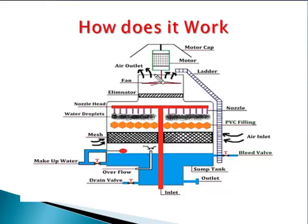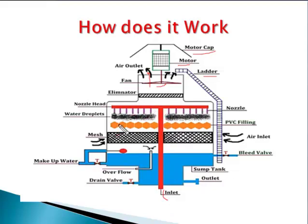Now we come to the working and basic components of the cooling tower. A motor is used to run the fan. The fan forces air to flow from lower to upward direction and out through the air outlet. A motor cap is used to cover the motor for safety, and a ladder is used for maintenance. Hot water enters through the nozzle head and through the nozzles it is spread out into water droplets.